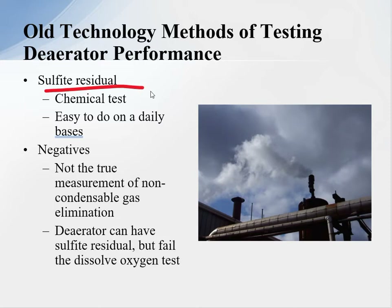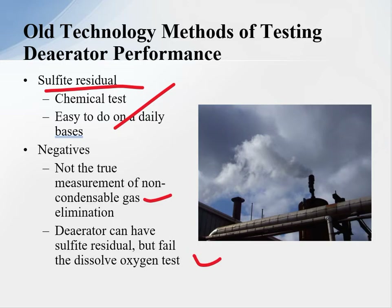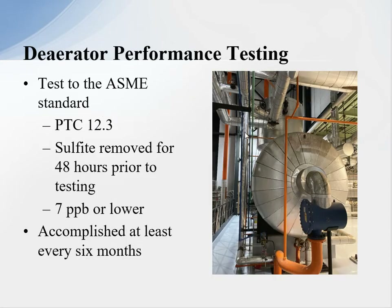Another method is sulfide residual — we do that chemical test daily, typically, and it tells us that we have a sulfide residual. But it doesn't tell us that we have removed the non-condensable gases. The deaerator can have sulfide residual but still fail the dissolved oxygen test. We test to the ASME standard for testing deaerators, which is PTC 12.3. Sulfide is removed 40 hours prior to testing so we get a true performance of the deaerator without sulfide.